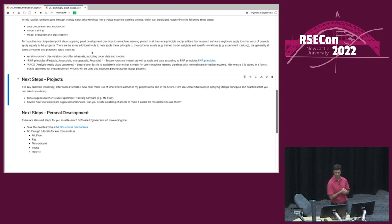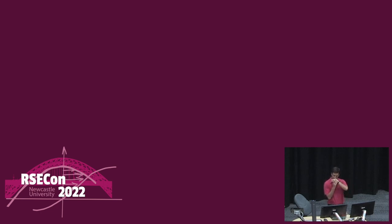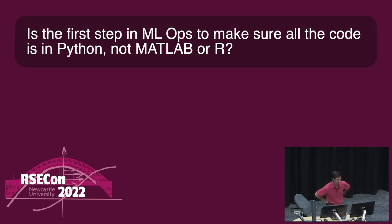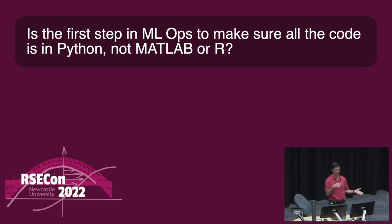I'm happy to take some questions. The first question: is the first step in MLOps to make sure all the code is in Python, not MATLAB or R? Absolutely not. All those things I showed generally have equivalents in MATLAB and R, and you can usually use them interchangeably between those languages. I just am familiar with Python so it's easier for me to show. Certainly R has a whole ecosystem of really nice tools around it — thinking of R Shiny for dashboards, for example.